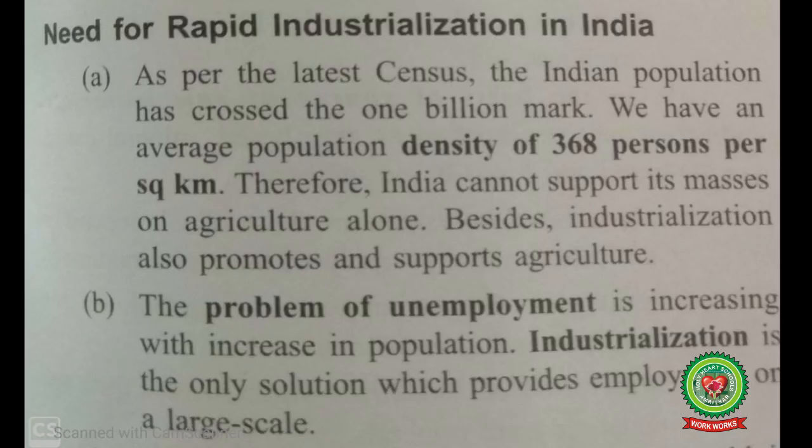As per the latest census, the Indian population has crossed the 1 billion mark. We have an average population density of 368 persons per square kilometer, making us the second most populated country in the world after China. Therefore, India cannot support its masses on agriculture alone; besides, industrialization also promotes and supports agriculture.